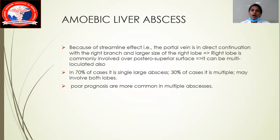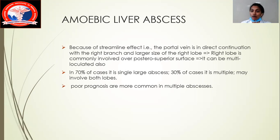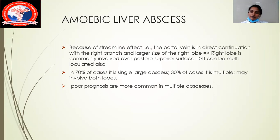Always remember in statistics: 70% of cases will have a single large abscess and 30% of cases will have multiple loculations, which can involve both lobes. If a patient has multiple loculated abscesses, we always conclude the patient has a poor prognosis. A good prognosis is only defined if it is a very small and early abscess with proper treatment at the right time.